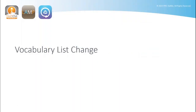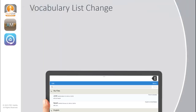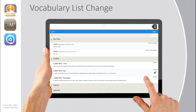You will notice a change to how the vocabulary list looks with Update 2.50 for all of our AAC apps. The vocabulary list in Lampords for Life, TouchChat, and Dialog AAC now has all of your custom copied vocabulary files at the top of the list in the My Files section. Tap to expand each section to see files for each language available in your app.